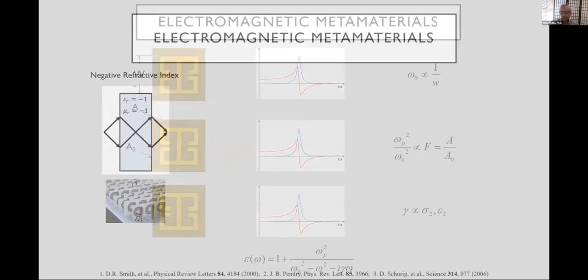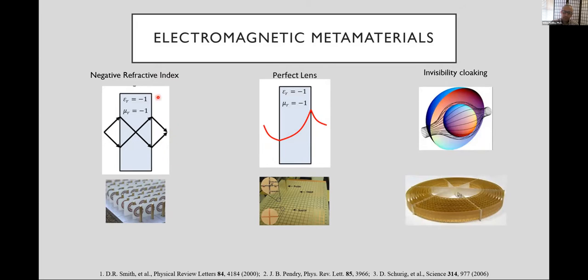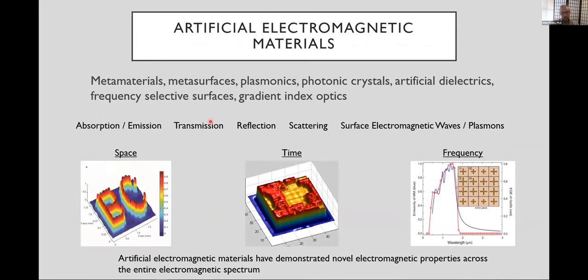And with these structures, researchers have shown various exotic effects. Over 20 years ago, we showed negative refractive index at microwave frequencies. That same type of lens, it turns out, has the ability to refocus evanescent waves as well, so one could form a perfect lens using a similar type of structure. And of course, everybody at Duke knows that invisibility cloaking is another type of option, a phenomenon that one can achieve with metamaterials.